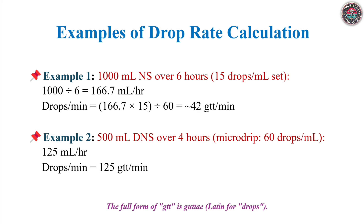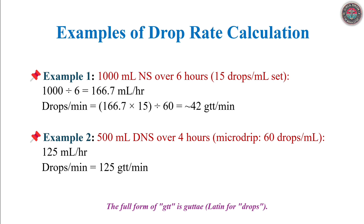Second example: a patient requires 500 ml of dextrose normal saline over 4 hours via a micro drip set at 60 drops per ml. Step 1: convert — 4 hours × 60 equals 240 minutes. Step 2: calculate ml per hour — 500 ml ÷ 4 equals 125 ml per hour. Step 3: for micro drip, drops per minute equals ml per hour — that is 125 drops per minute.